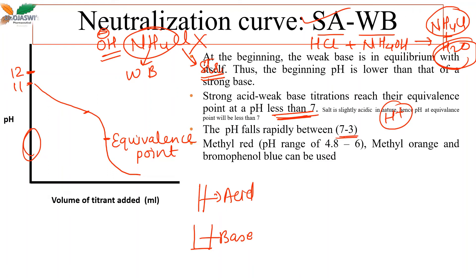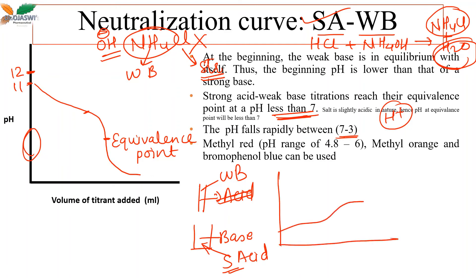If done in reverse — strong acid in the flask and weak base in the burette — the neutralization curve shows the equivalence point below pH 7. Indicators such as methyl red, methyl orange, and bromophenol blue can be used for these strong acid–weak base titrations.